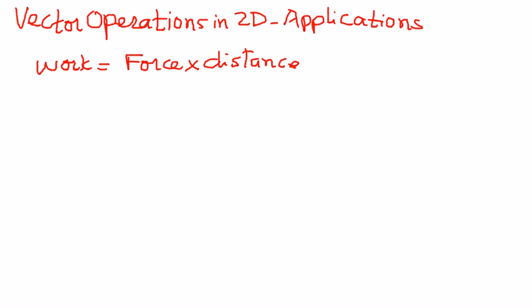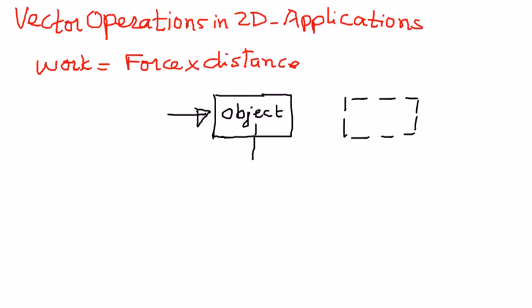To explain this in terms of a figure, if we have an object, and if there is a force which is applied on this object, and if this object moves from this position to another location, and if the distance between these two points is d, and if this is the force which is applied on the object, then work which is represented by w, force which is represented by f, and the distance which is represented by d.